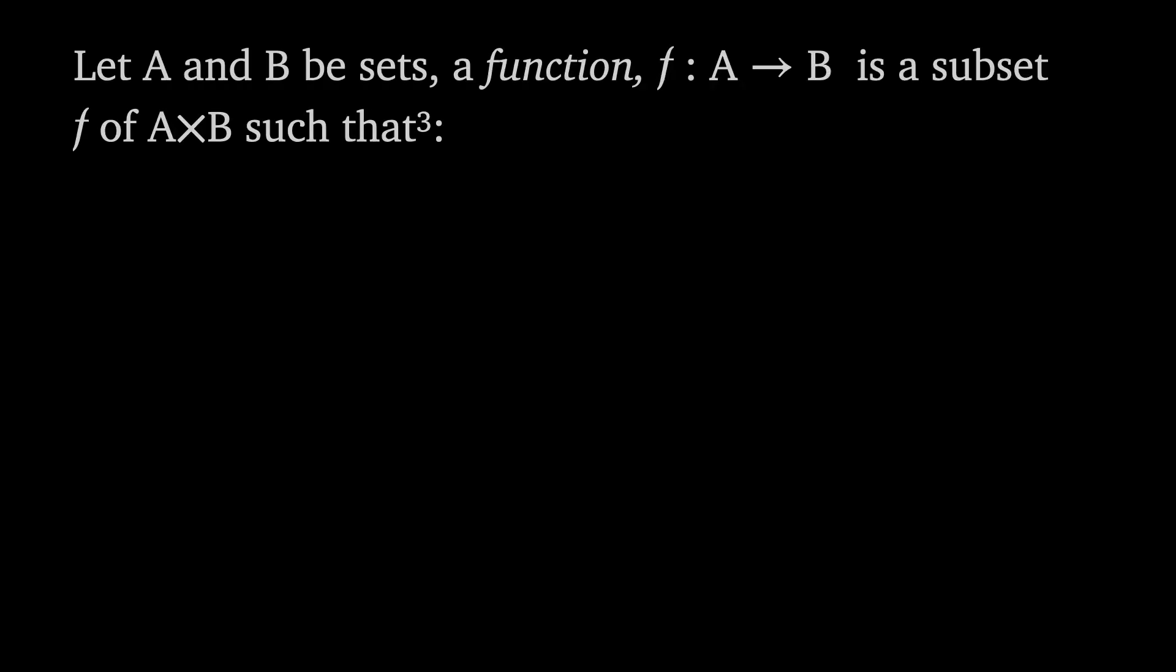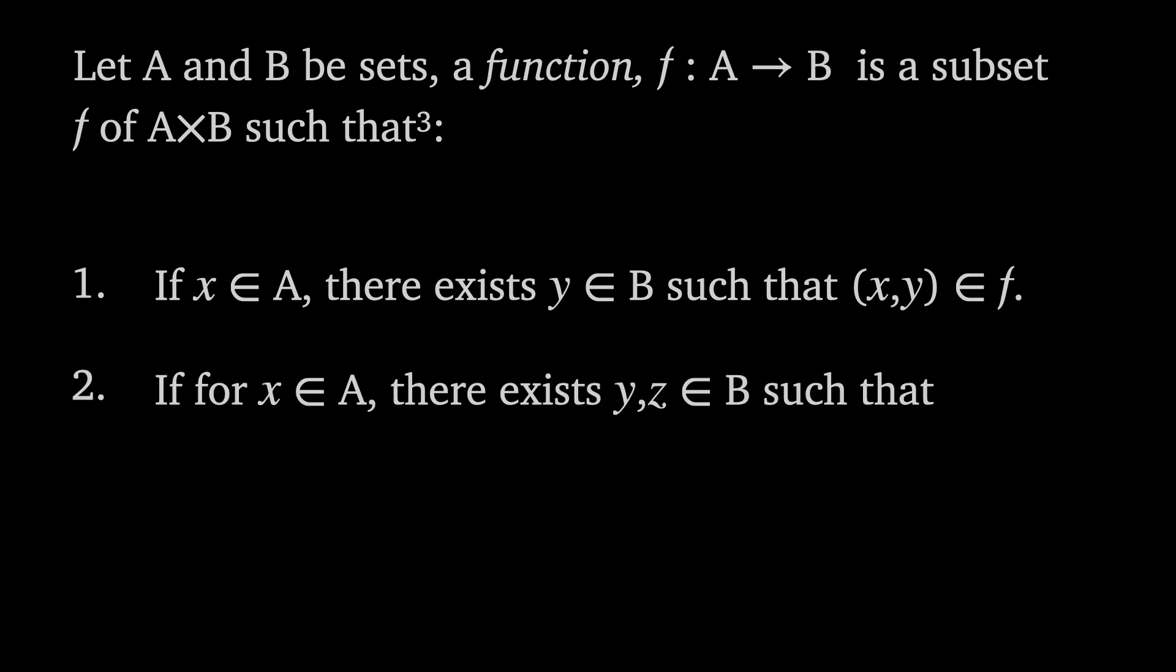Let a and b be sets. A function from a to b is a subset f of a cross b such that if x is in a there exists y in b such that the ordered pair x and y is in f and if for x in a there exists y and z in b such that x and y is in f and x and z is in f then y is equal to z. These two rules are a little bit cryptic so let me explain exactly what they mean.